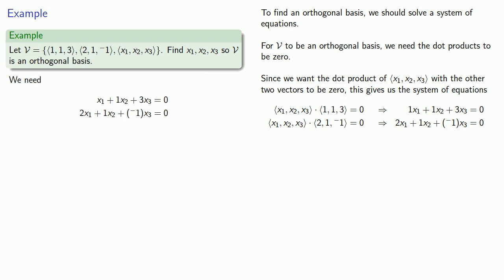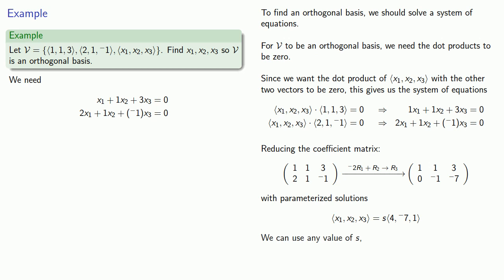Here's our system of equations and we can row reduce the coefficient matrix and get our parameterized solutions. To get our actual vector we'll pick a value of s. We could use any value of s, so let's take s = 1 to get our simplest solution (-7,1) as our third vector in our orthogonal basis.